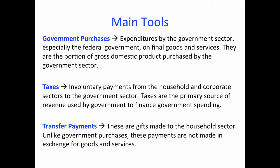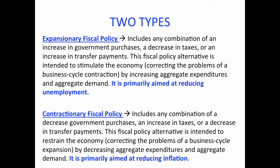Unlike government purchases, transfer payments are not made in exchange for goods and services. These include, for example, food stamps, social security, unemployment compensation, and other welfare payments. One key question is to understand how changes in fiscal policy affect the economy. The answer depends on whether the goal is to stimulate or to put the brakes on the economy.